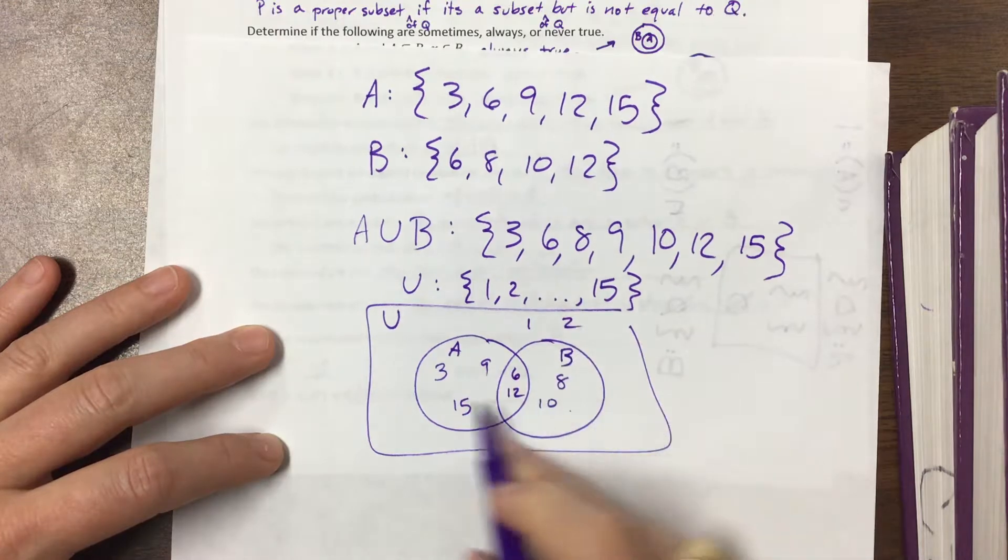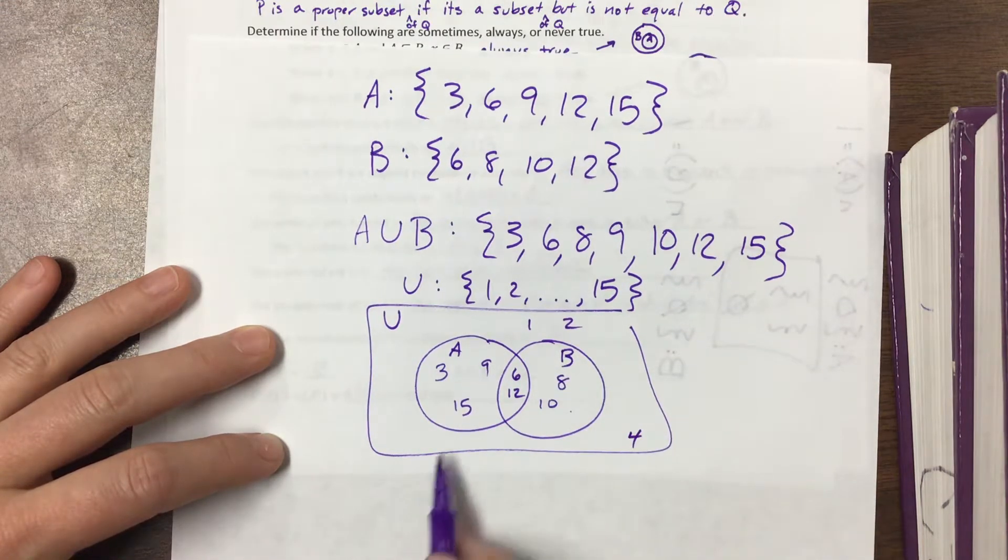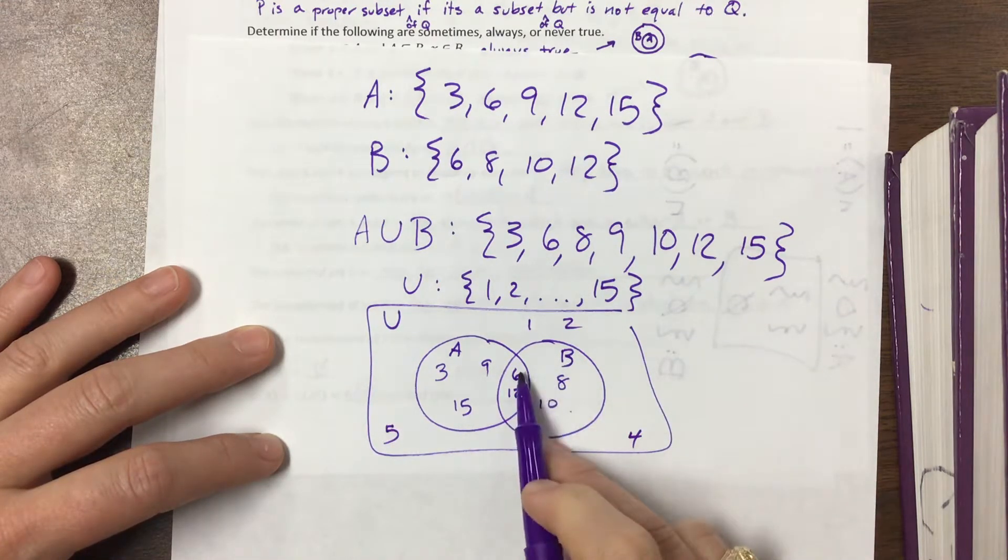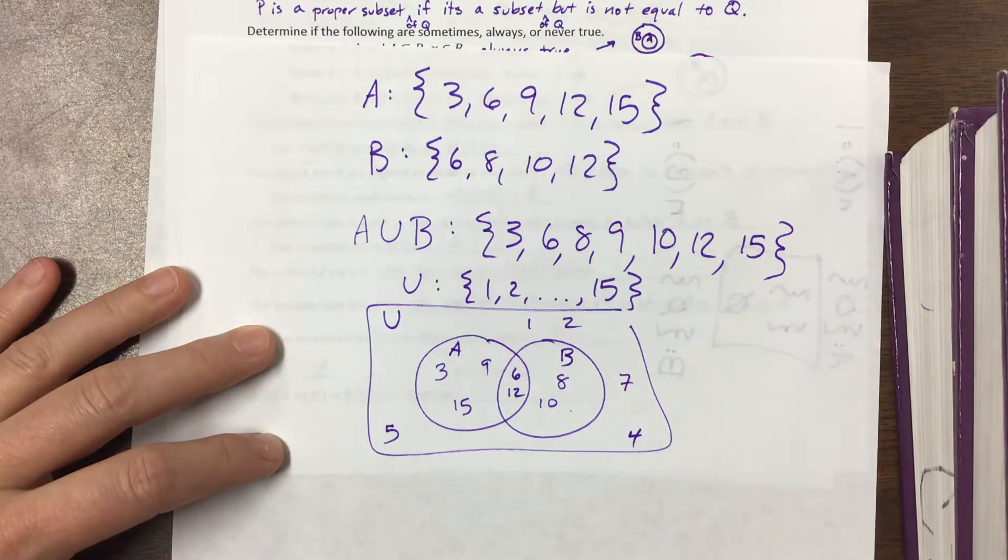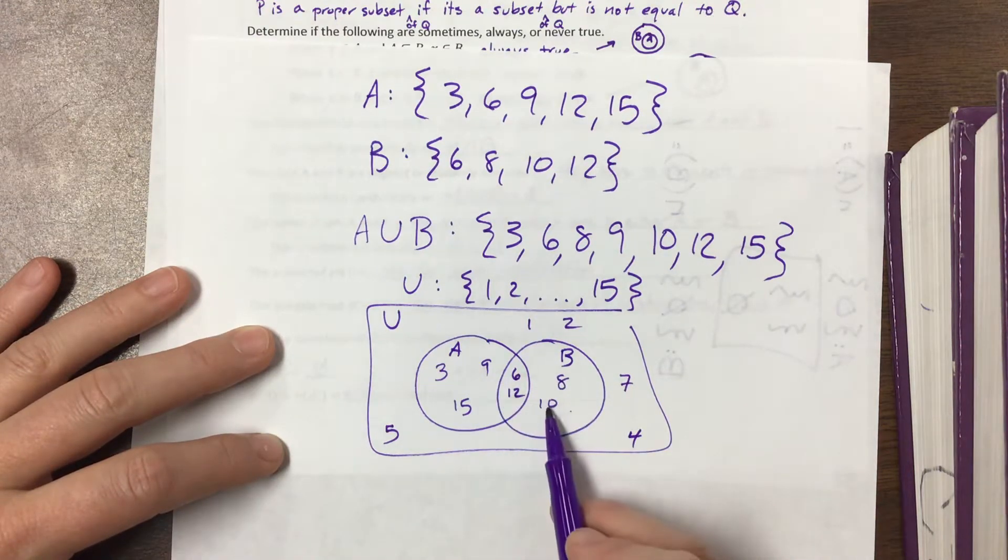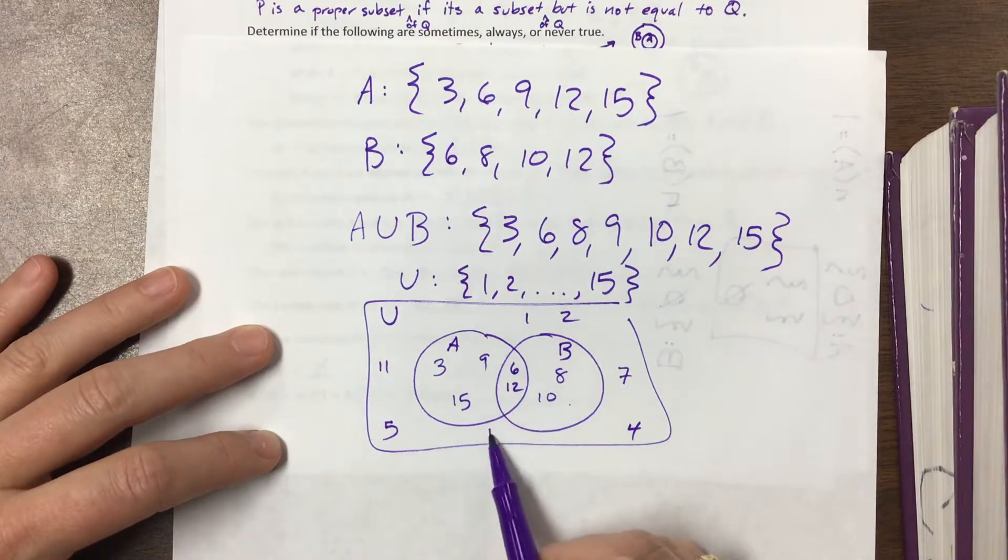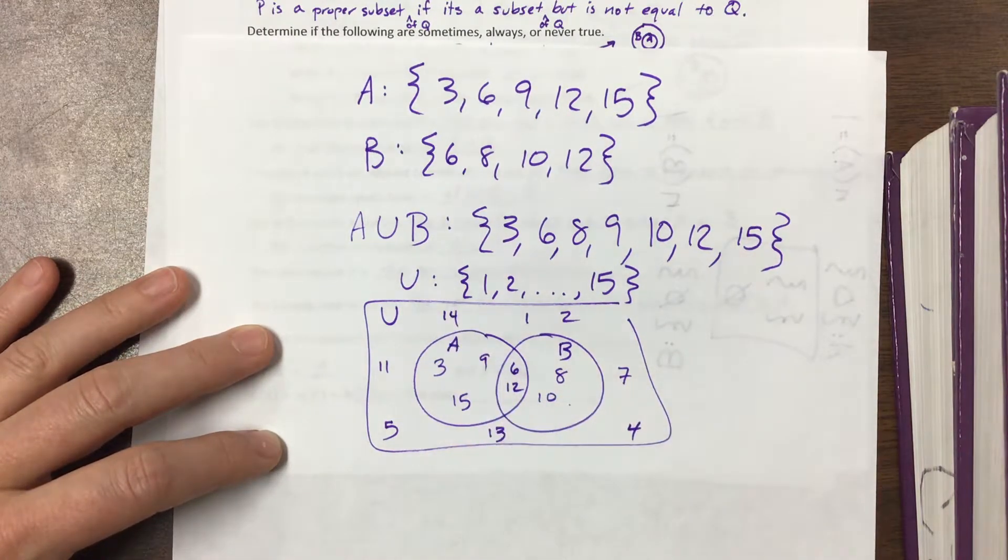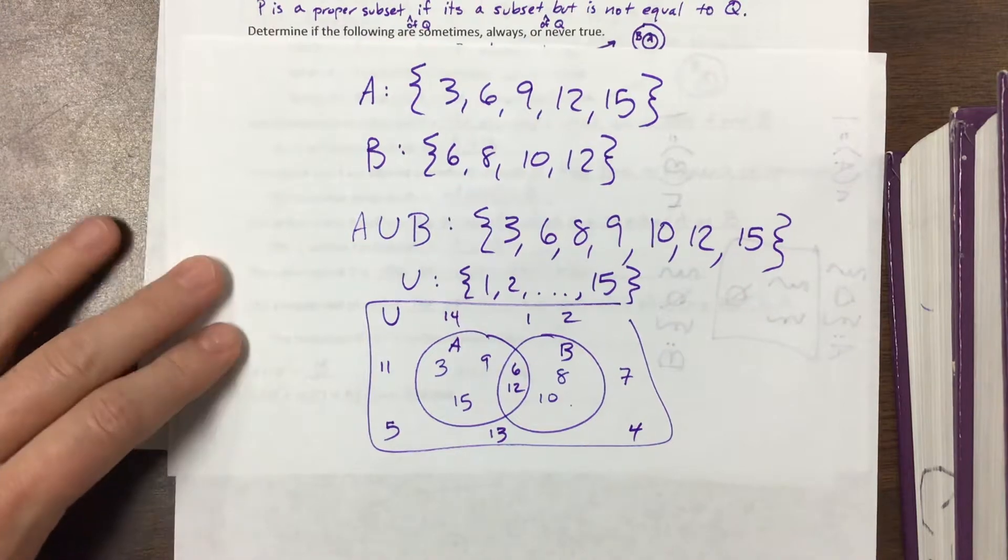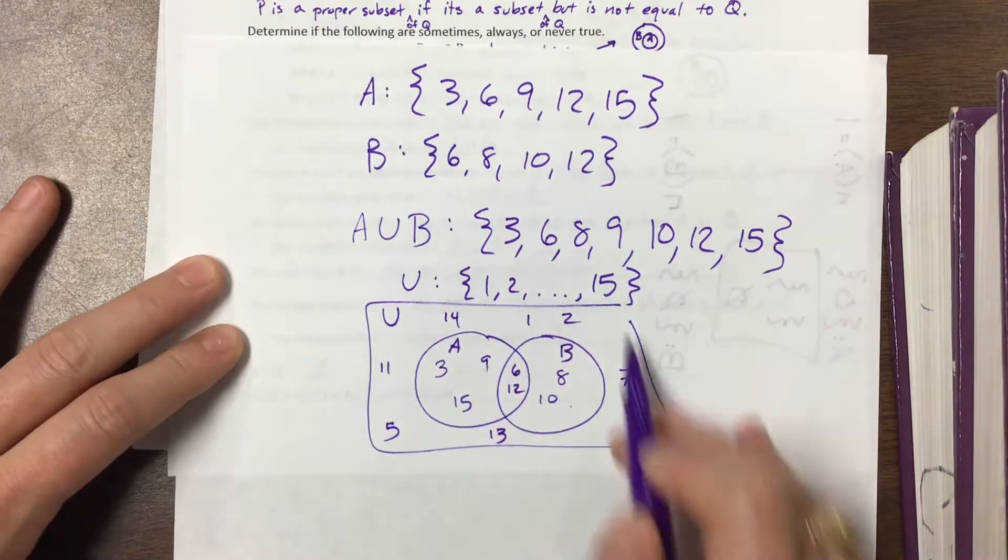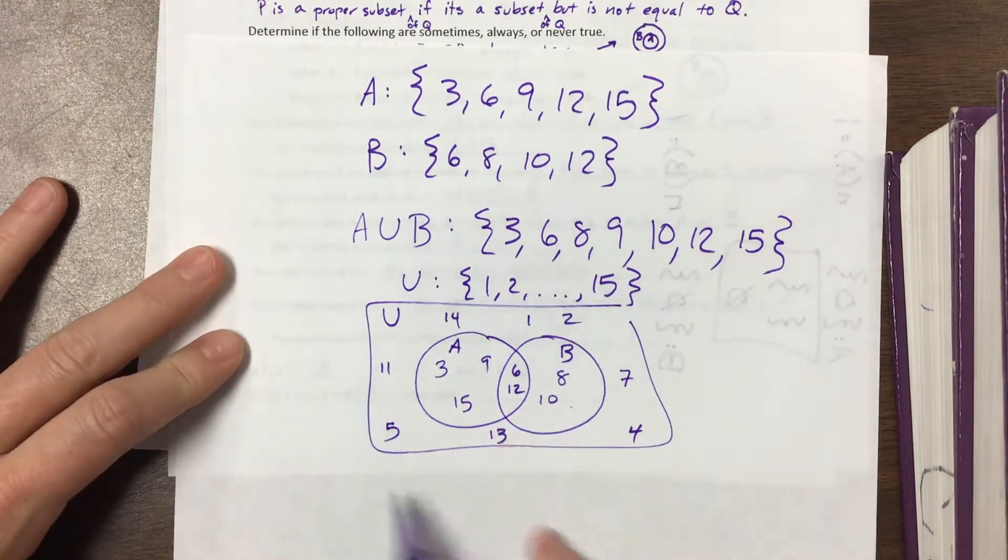And then if I said the universal set is 1 through 15, then I've got 1 and 2, and 3's here. I have 4, I have 5, 6, I have 7 that would be out here. Here's 8, here's 9, there's 10, 11 would be somewhere out here. 12, I don't have 13 and I don't have 14 written down. So that's where the universal set, we usually make a box if we're drawing a Venn diagram, and that's the world that we're living in.